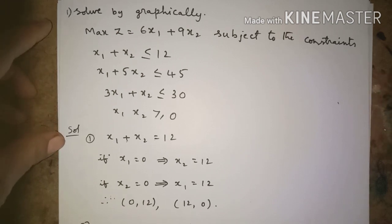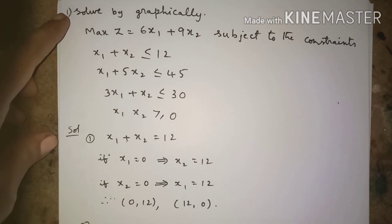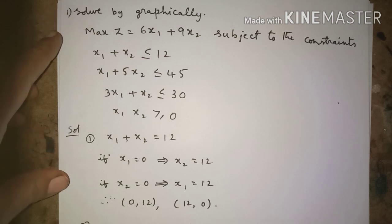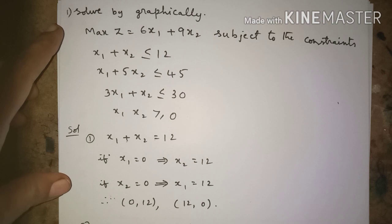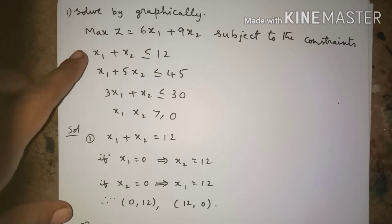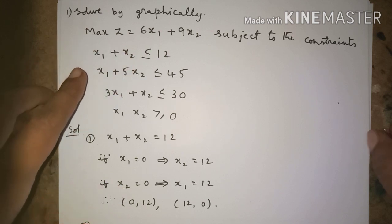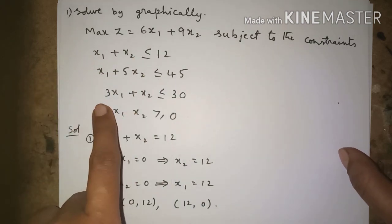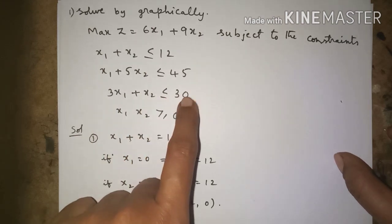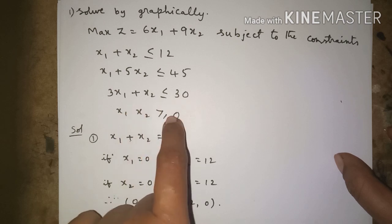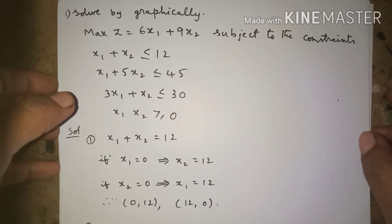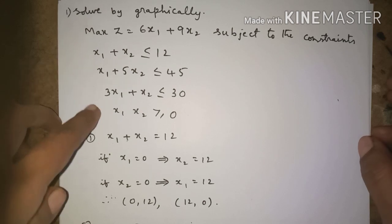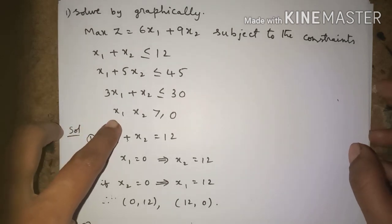Hello everyone. The first problem: solve the LPP using the graphical method. The given problem is to maximize z equal to 6x1 plus 9x2, subject to the constraints: first constraint x1 plus x2 less than or equal to 12; second constraint x1 plus 5x2 less than or equal to 45; third constraint 3x1 plus x2 less than or equal to 30; and all decision variables x1, x2 greater than or equal to 0.